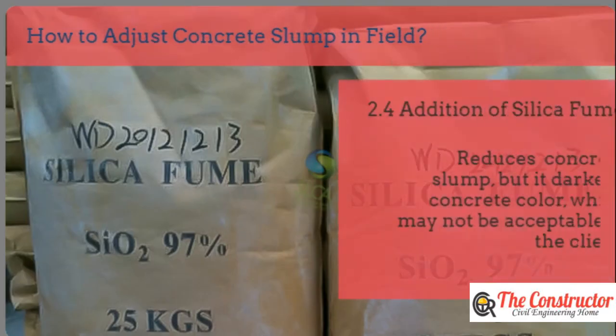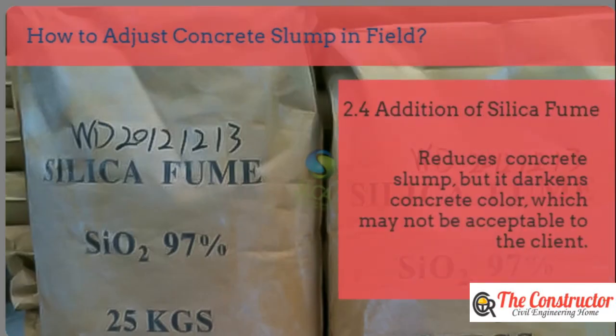The addition of silica fume is another way of reducing the slump of concrete, but it may not be the right choice since silica fume darkens concrete color, which may not be acceptable to the client.